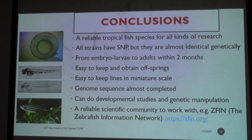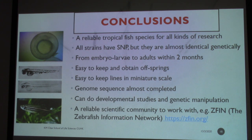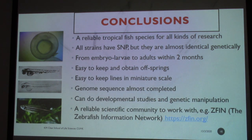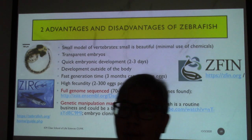All in all, we have a reliable collection of this tropical fish species for all kinds of research. From embryo to larvae to adults within a few months, you can obtain transparent embryos and larvae for developmental studies. Because they are small, we can keep lines in a miniature scale, obtain many offspring, and handle them in a small space. We can do developmental studies and genetic manipulation because the genome sequence is almost completed. There is also a very reliable scientific community to work with — register on ZFIN and you can get all the information you need. With this, we finish video one, and the next video will talk about the advantages and disadvantages of zebrafish.